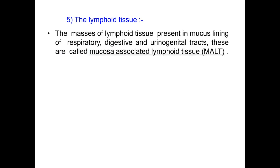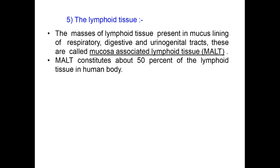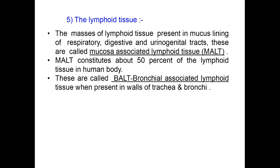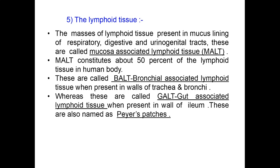The masses of lymphoid tissue present in the mucus lining of respiratory, digestive and urogenital tracts are called mucosa-associated lymphoid tissue or MALT. MALT constitutes about 50% of the lymphoid tissue in the human body. These are called BALT or bronchial-associated lymphoid tissue when present in walls of trachea and bronchi, and GALT or gut-associated lymphoid tissue when present in the wall of the ileum, also named as Peyer's patches.